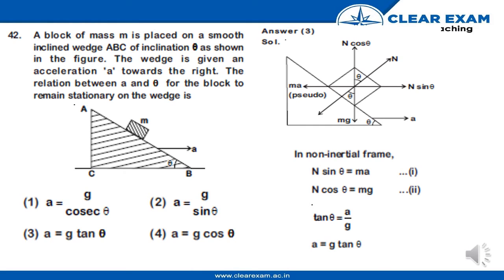Here is question number 42. A block of mass m is placed on a smooth inclined wedge ABC of inclination angle theta, as shown in the figure. This is the wedge ABC with inclination angle theta. The wedge is given an acceleration 'a' towards the right.